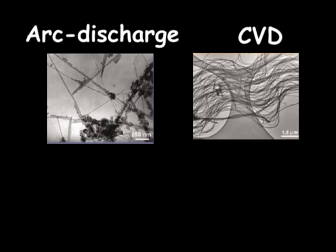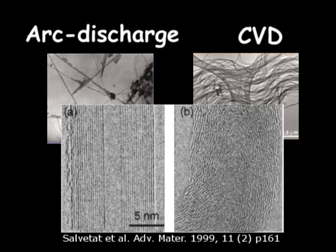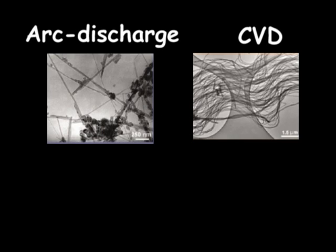You can see how the arc discharge tubes are much more straight and more perfect, while the CVD tubes are more wavy because they have many more defects in their walls. I hope it's clear to see that the different production techniques produce samples of very different qualities with different structured nanotubes.